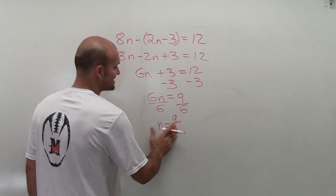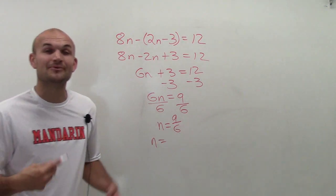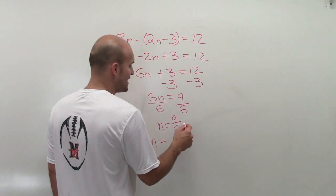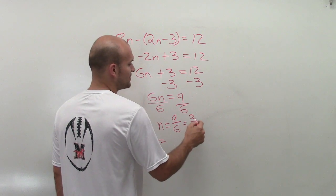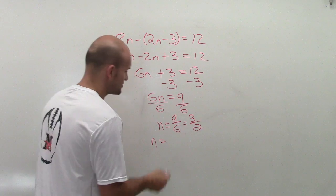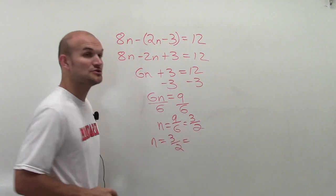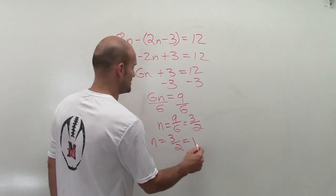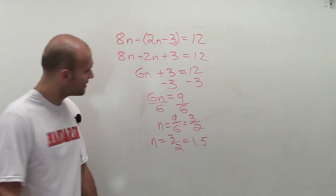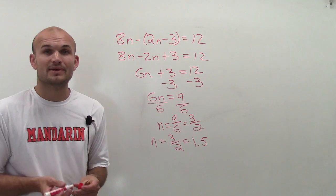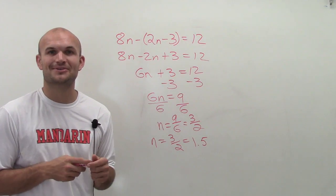9/6, which we can reduce by dividing by 3 on top and bottom. We get 3/2, so n equals 3/2, or for those who prefer decimals, 1.5. There you go, that's a quick demonstration on how to solve the problem. Thanks!